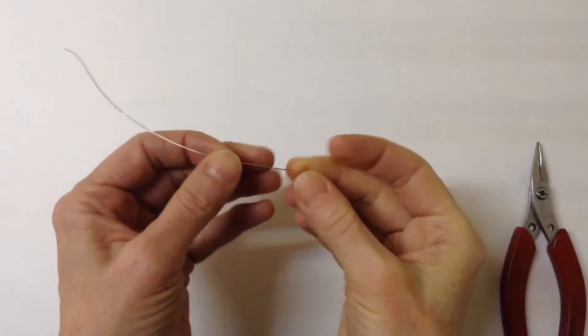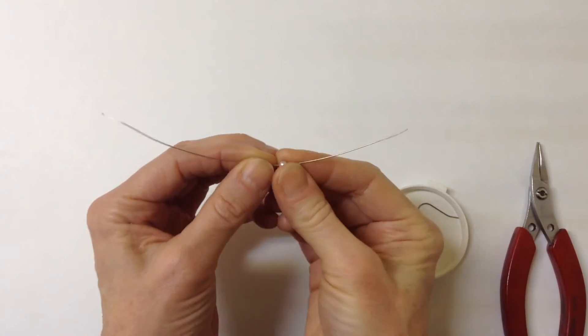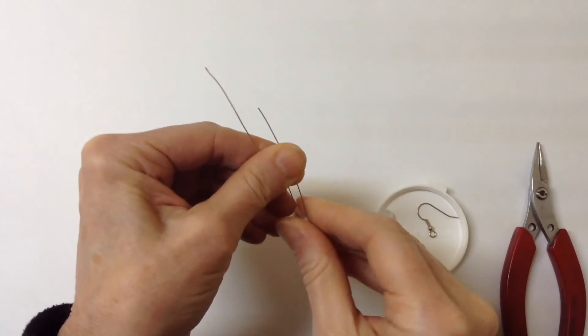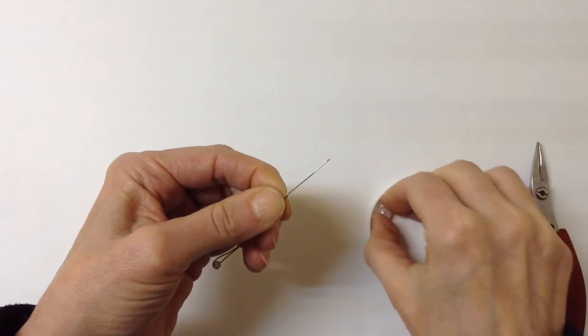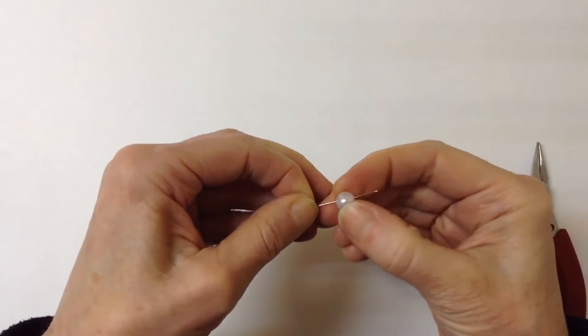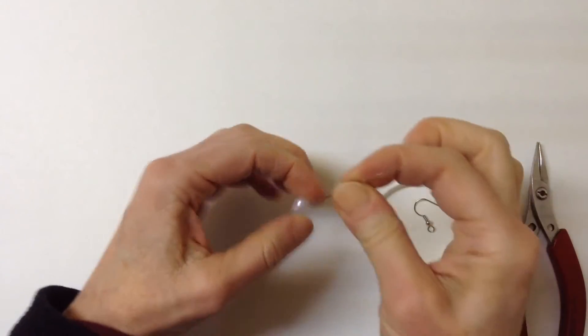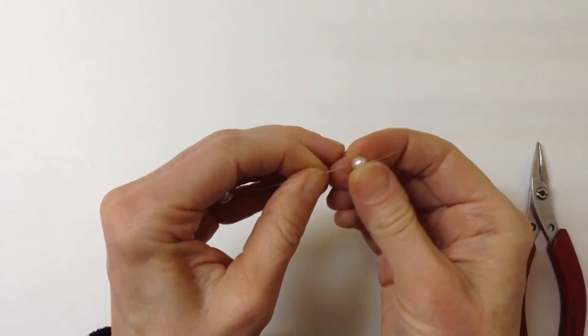You're going to start by putting the 4 millimeter bead on first and not quite halfway along. You want one end of the wire to be longer than the other and then you're going to put the two wires together and put your 8 millimeter bead, put both wires through the bead and then the 6 millimeter bead.